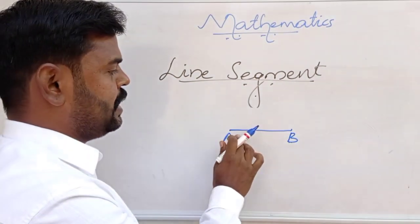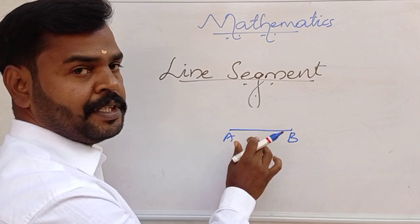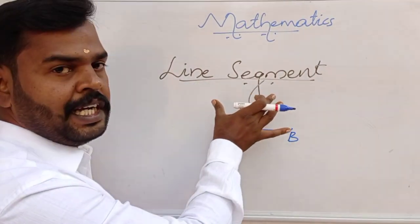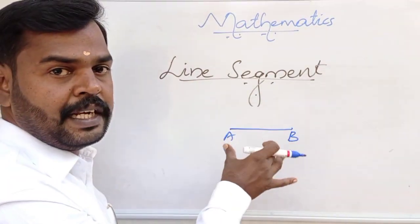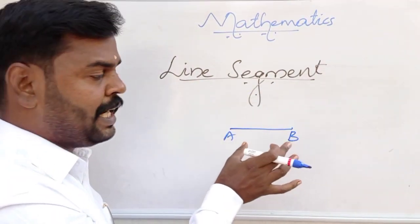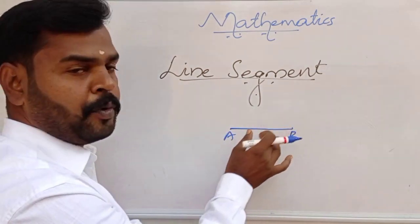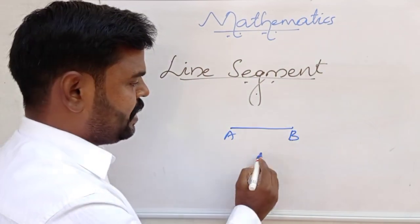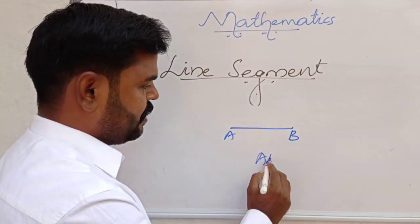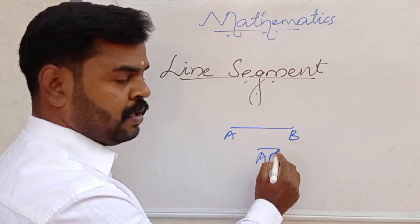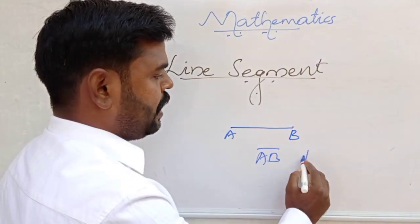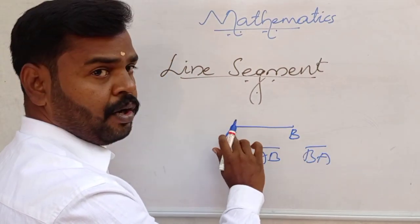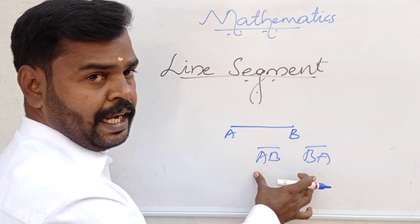Suppose here 10 centimeters or 15 centimeters — so a line segment has finite length and two endpoints. We can represent this as line segment AB or line segment BA. We can write BA or AB — line segment AB or line segment BA.